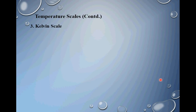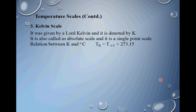The third scale is the Kelvin scale, given by Lord Kelvin, and it is denoted by K — not degree K, because the degree symbol was officially dropped. It is also called the absolute scale and it is a single-point scale, depending only on one value. The relationship between Kelvin and degree Celsius is: temperature in Kelvin equals temperature in degree Celsius plus 273.15.